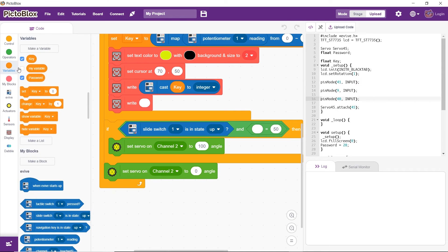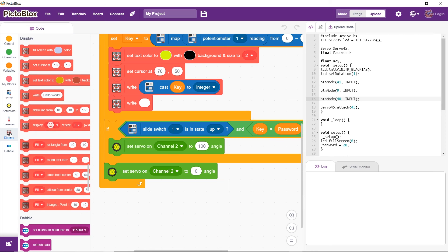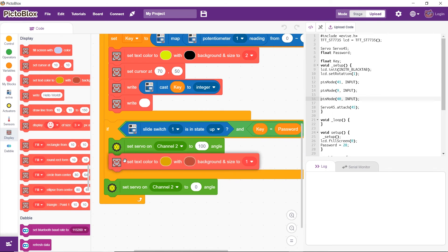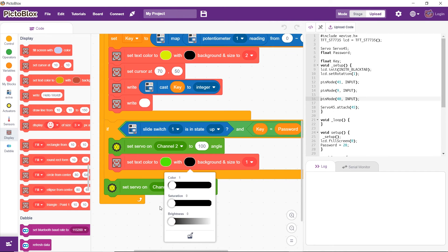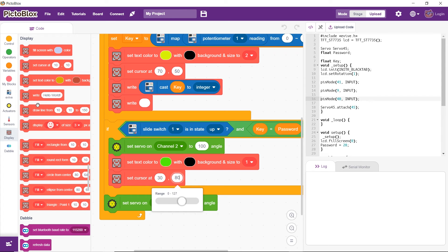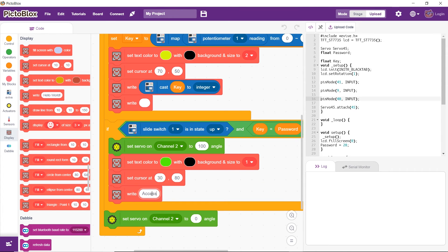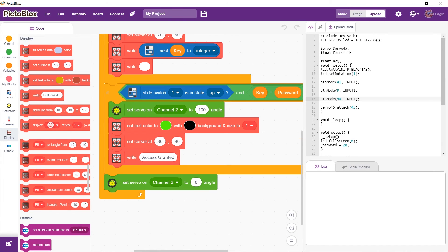The next if statement controls the interlocking mechanism. Only if the entered password and the set password are the same and the slide switch is up, the servo angle will set to 100 degrees and the door will open. The message 'access granted' will also be displayed on the screen. Otherwise, the servo angle remains at zero degrees and the door will remain locked, and the screen will display 'access denied'.